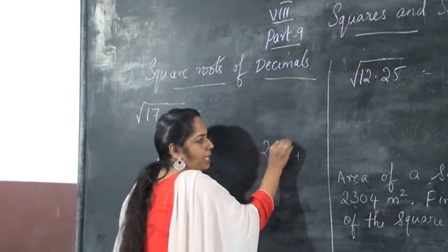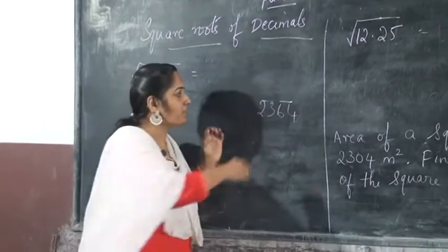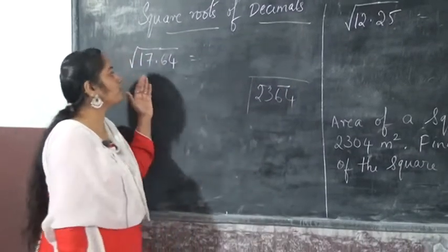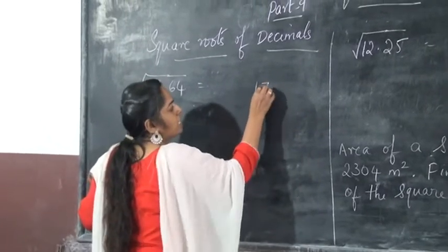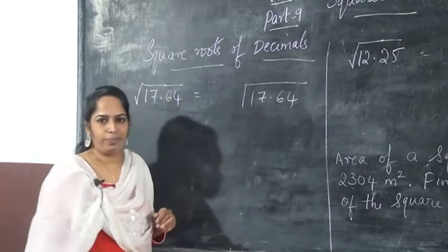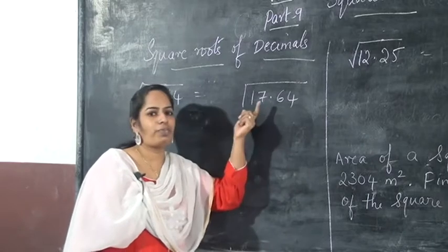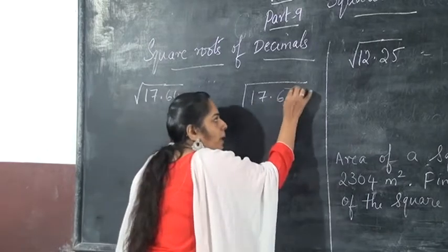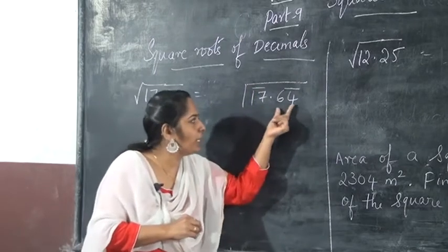We will take 2 numbers here and again 2 numbers. Like this, we find the square root. So now we want to find out the square root of the decimal value. How will you find this decimal value? We can write the square root of 17.64 like this. We want to take the same approach we studied before — that is 2 numbers here and again 2 numbers here.